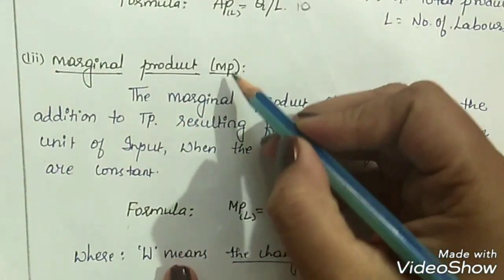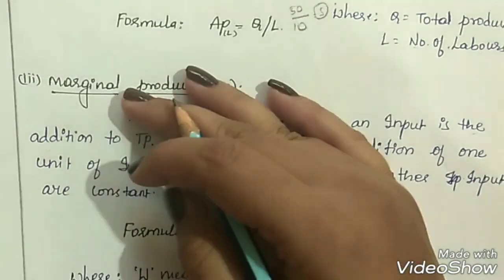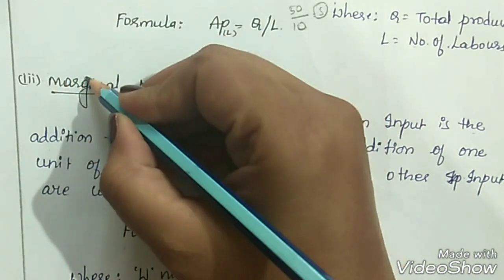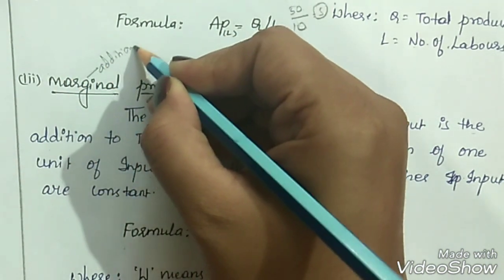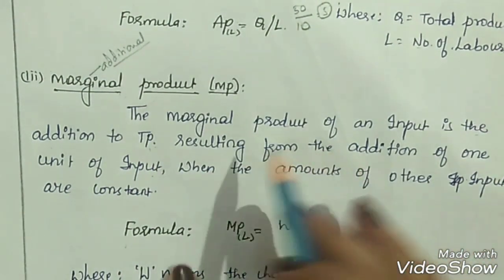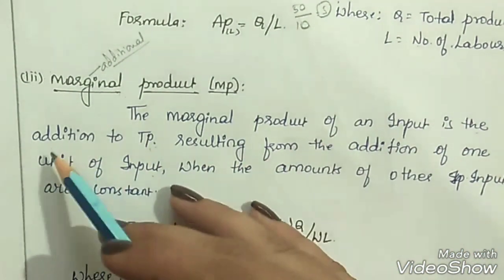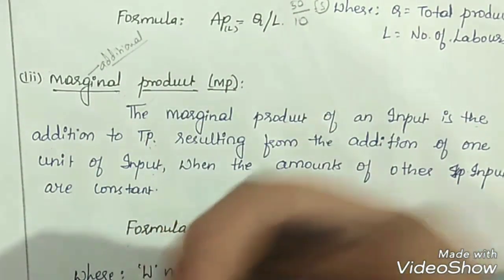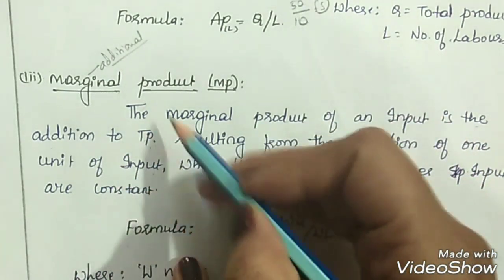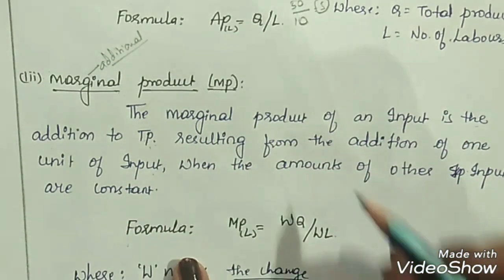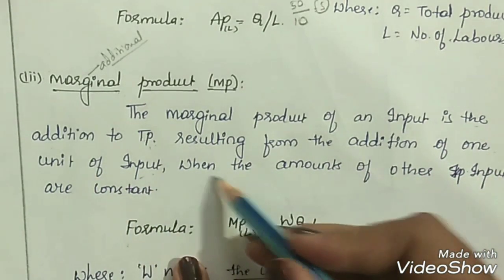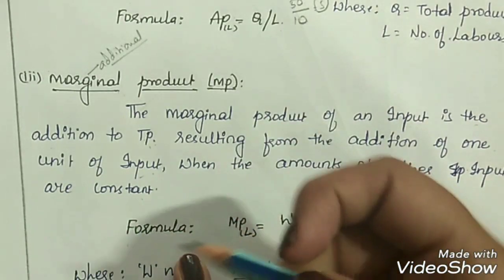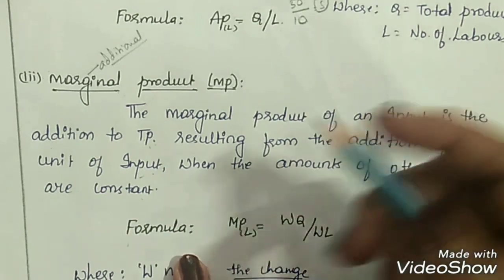Next is marginal product, also known as MP. Whenever the term 'marginal' is used in economics, it means additional. The marginal product of an input is the addition to total product resulting from the addition of one unit of input when the amounts of other inputs are constant. Here only one factor is variable; all other factors are fixed.